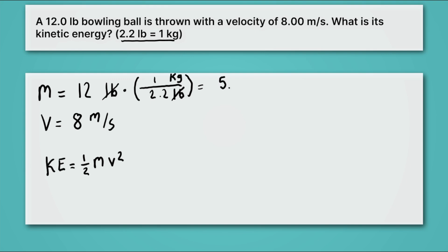When we do, we get 5.454, and a bunch of other digits, kilograms. When you get a bunch of digits out of your calculator, it's important to just keep those around. So keep that number in your calculator, and we'll use it again in just a second.